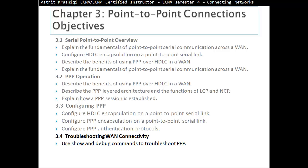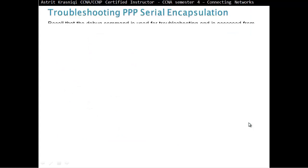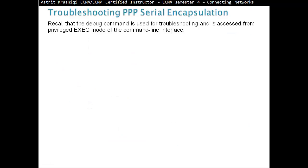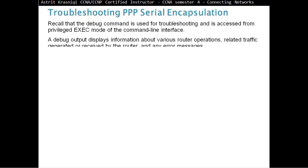Here we use show and debug commands to troubleshoot PPP. Recall that the debug command is used for troubleshooting and is accessed from privileged exec mode of the command line interface. Please do not use debug on the production network during a busy period, because debug will take priority on the routers and switches, so it can log you off from your device and you won't be able to manage the device. You should use debug with caution.